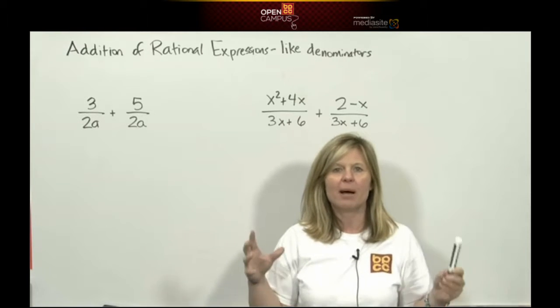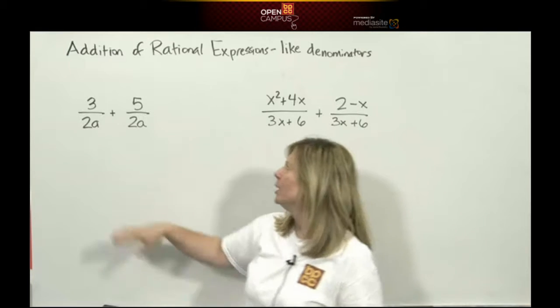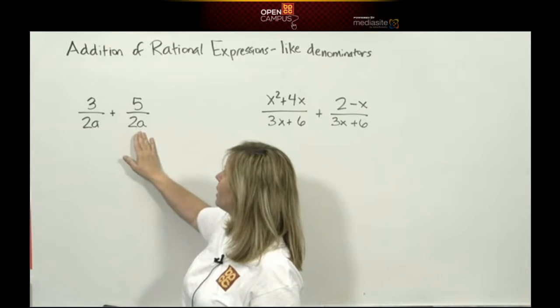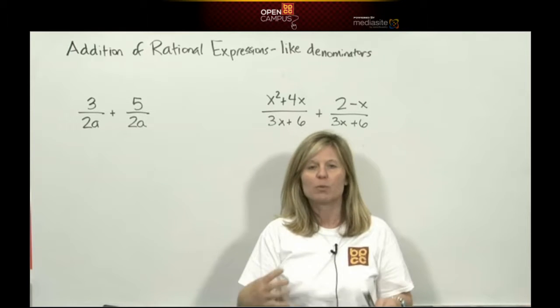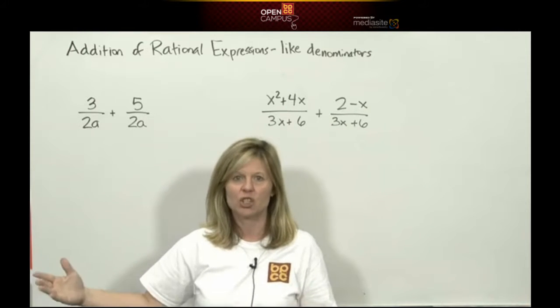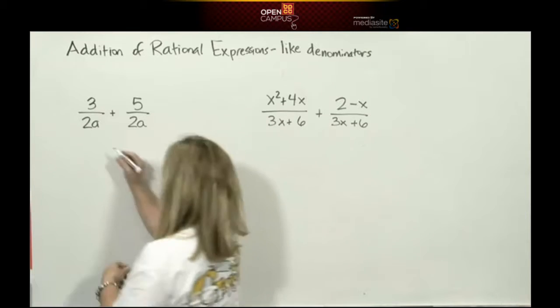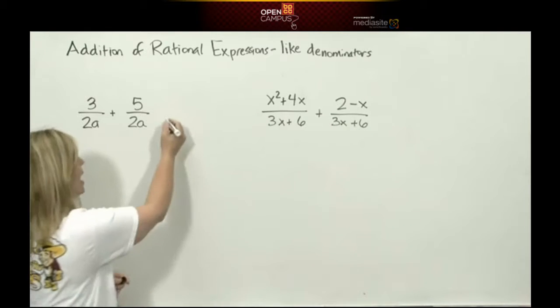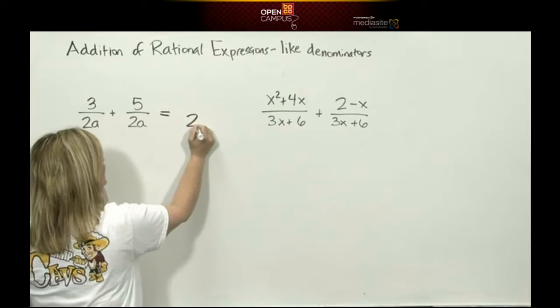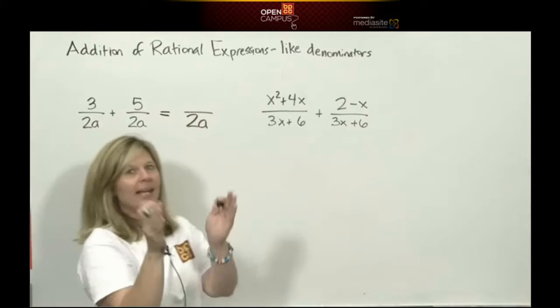That my denominators are the same. My denominator here is 2a, my denominator here is 2a, that's great, they're the same, which means I can proceed and do addition. To add, the rule is you write the denominator; it's not going to change sides when you add, so 2a and 2a stays 2a, the piece of the slice of the pie is going to stay the same.